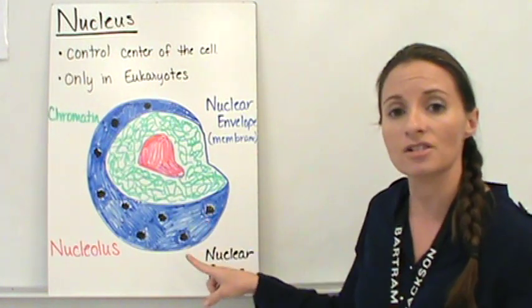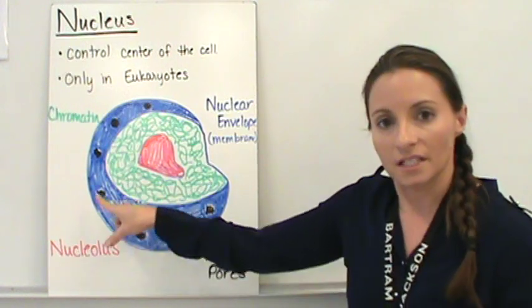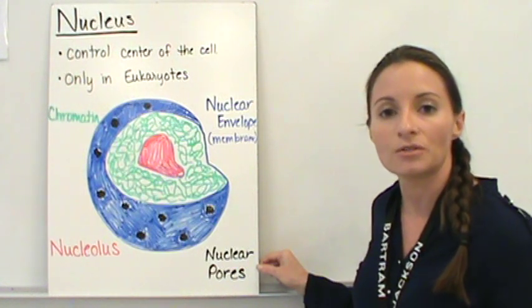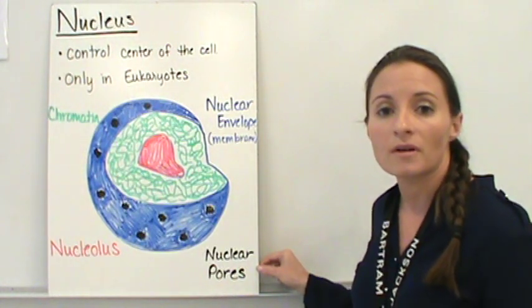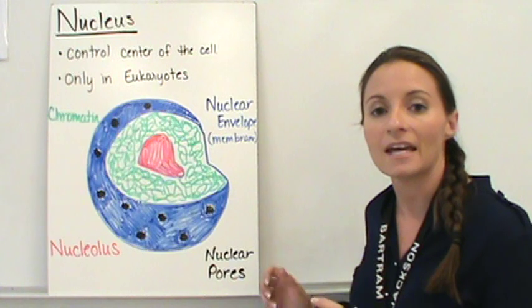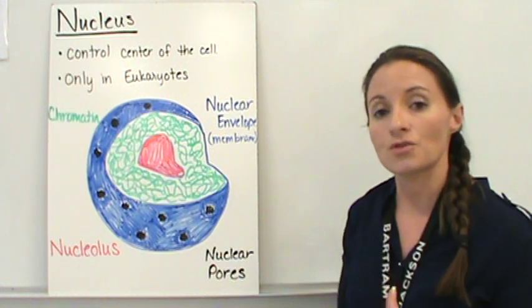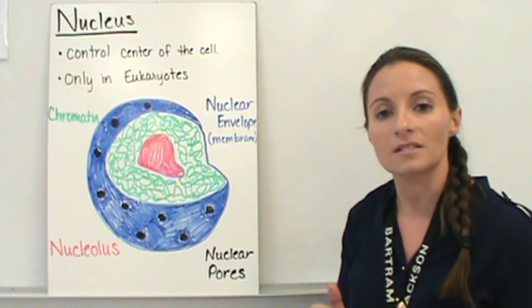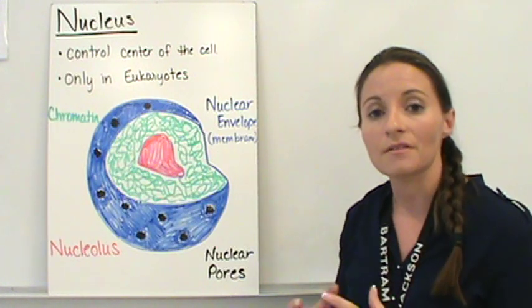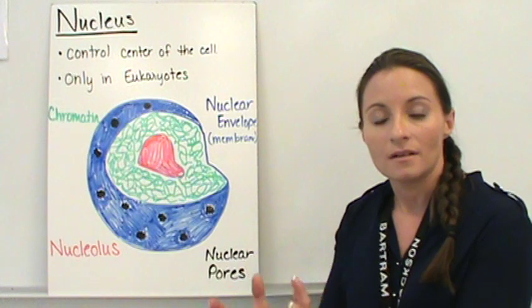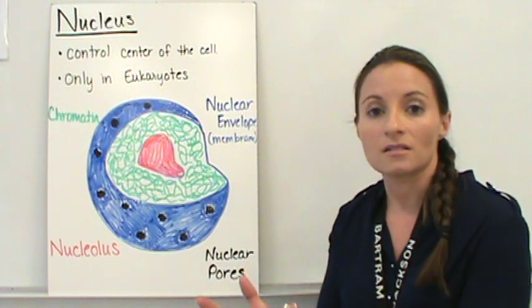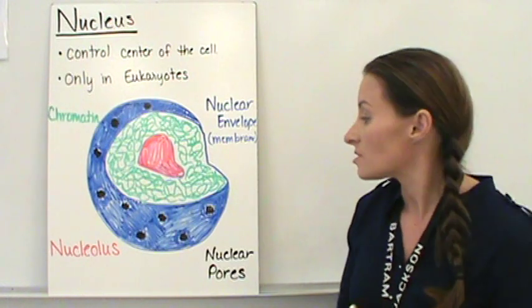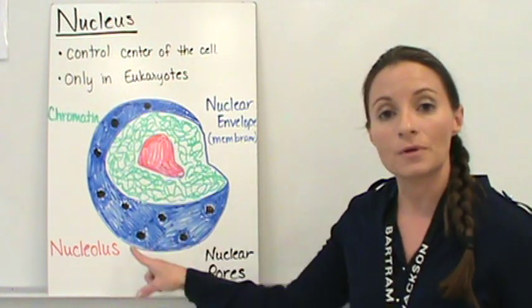Now that barrier actually has some dots on it. If you notice here in black, there are some dots and those are going to be what are called nuclear pores. The nuclear pores actually allow things to move in and out of the nucleus as they need to. It controls what goes in and out of the nucleus. But it does allow certain things to go in and out. Because there are things that need to pass from the DNA. We do need to get messages from the DNA out to the rest of the cell and we need to get things out. So they travel through those nuclear pores.